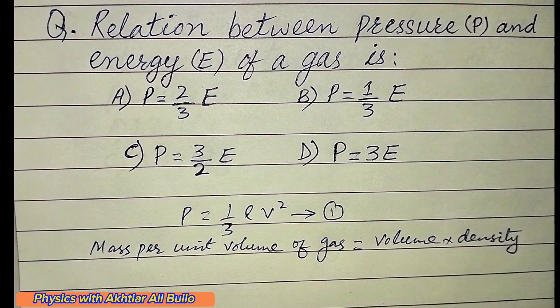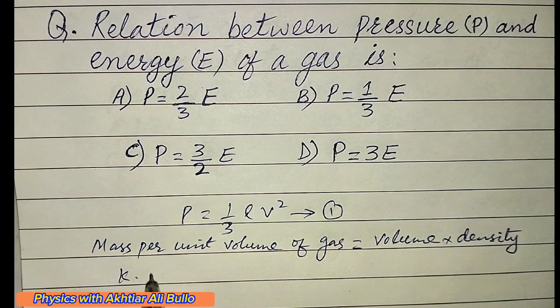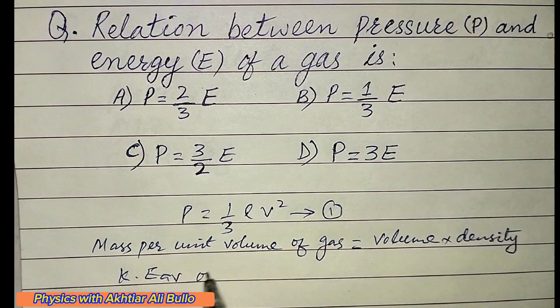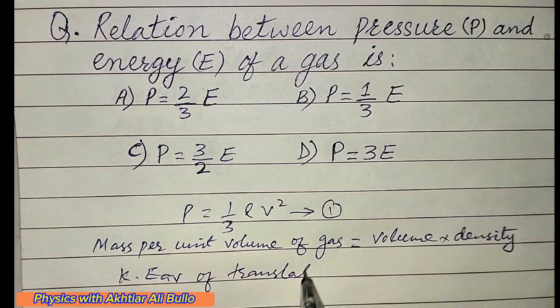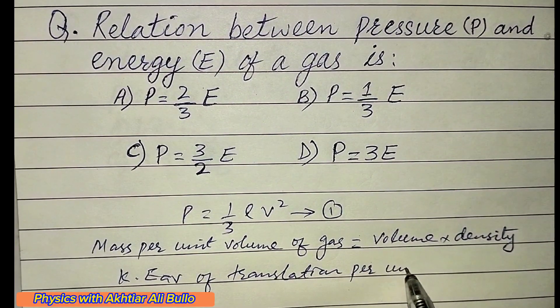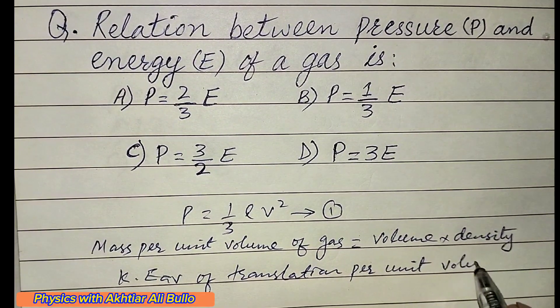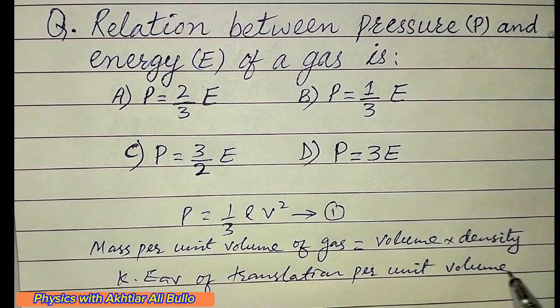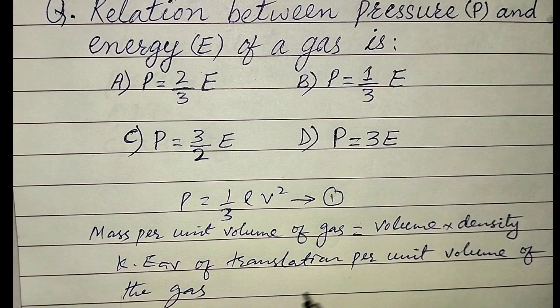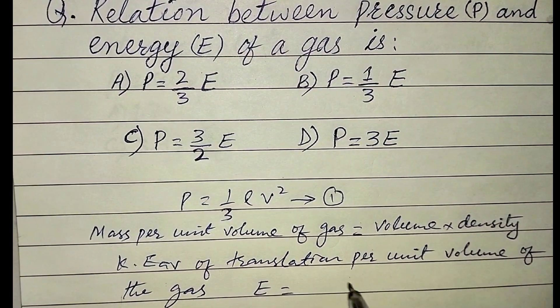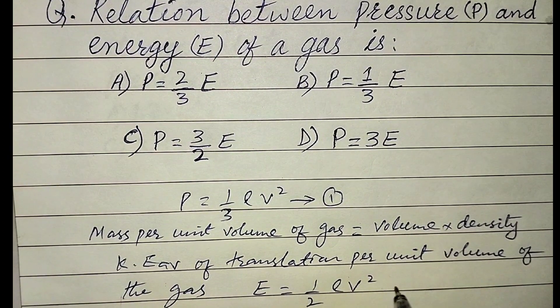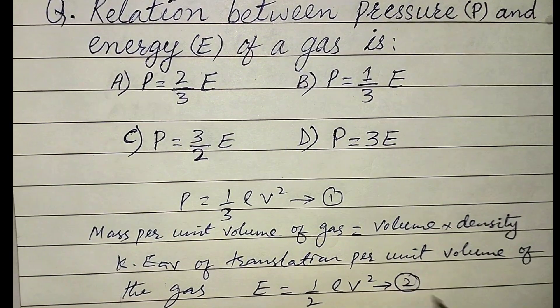The average kinetic energy of translation per unit volume of the gas is E = (1/2)ρv². This is equation 2.